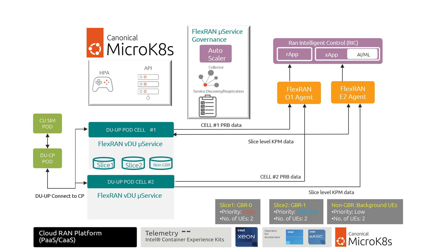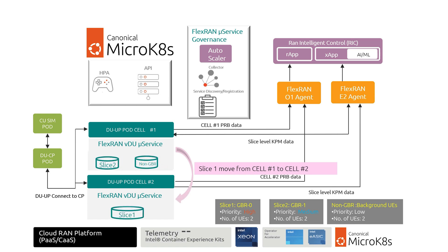The DU-UP port then connects with the DU-CP port and makes the VDU configuration update. After cell 2 is on air, to ensure the QoS of high-priority Slice 1 UEs, SMO triggers the traffic steering procedure to move Slice 1 traffic from cell 1 to cell 2, ensuring that the QoS of Slice 1 is guaranteed on cell 2 with adequate radio resources.